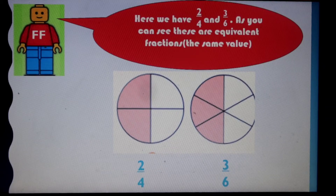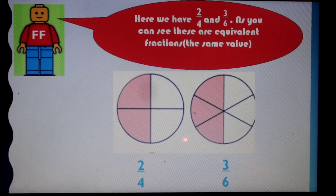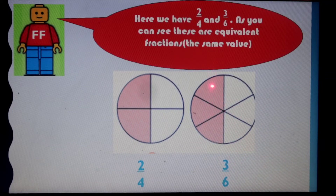So we've got one, two here — four pieces — that's two quarters. Two quarters is the same as three sixths, because one, two, three, and we've got six pieces altogether. It's the same amount. So equivalent fractions mean the same.